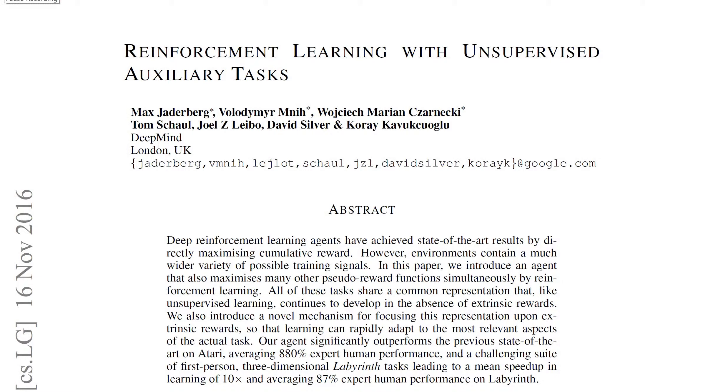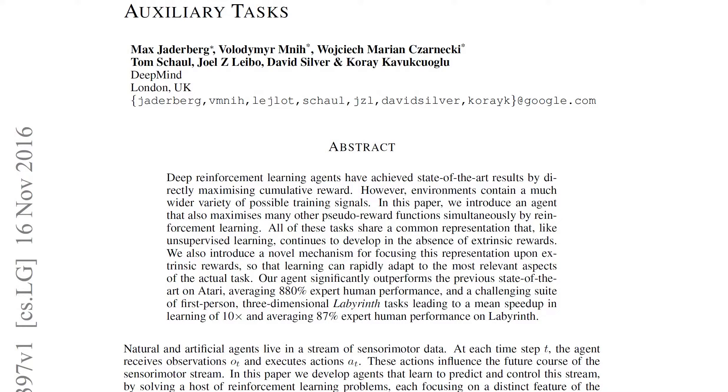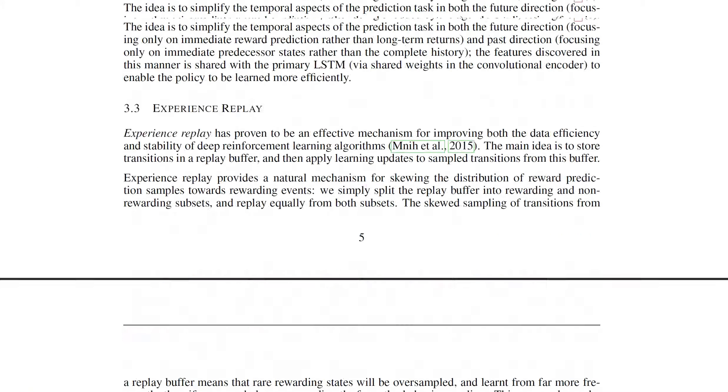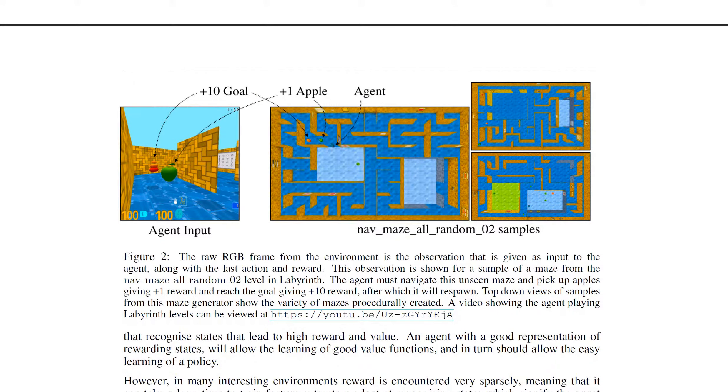Hi there. Today we're looking at reinforcement learning with unsupervised auxiliary tasks by Google. In this paper the authors consider a reinforcement learning task. It looks like this kind of maze where you have to navigate from pixel inputs. You have to collect apples and reach the goal and this gives you rewards.